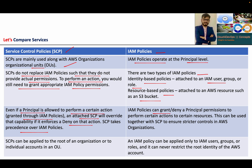IAM policies can grant or deny a principal's permission to perform certain actions on certain resources. This can be used together with SCP to ensure strict controls in an AWS organization. If you want to make your organization much stronger from a security perspective, you have to use SCPs, guardrails, and IAM policies as a combination.